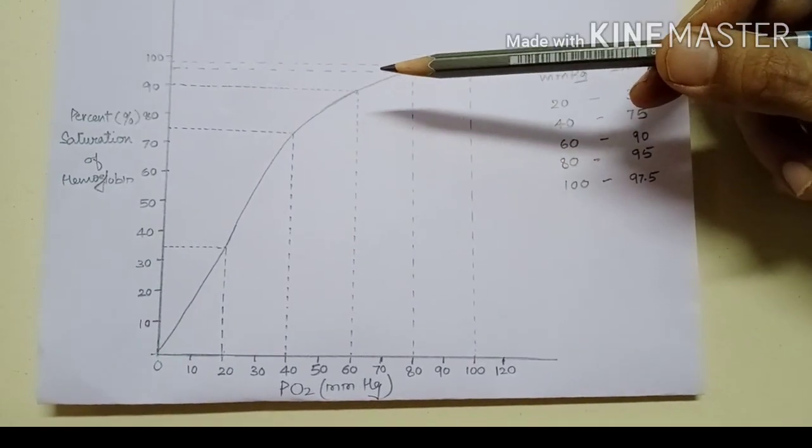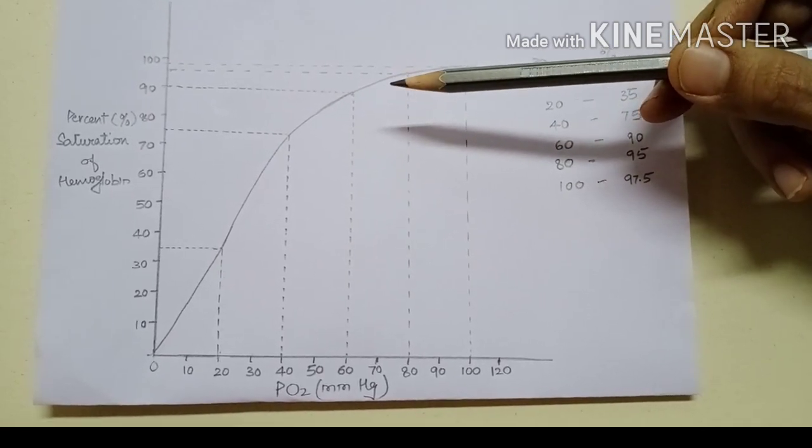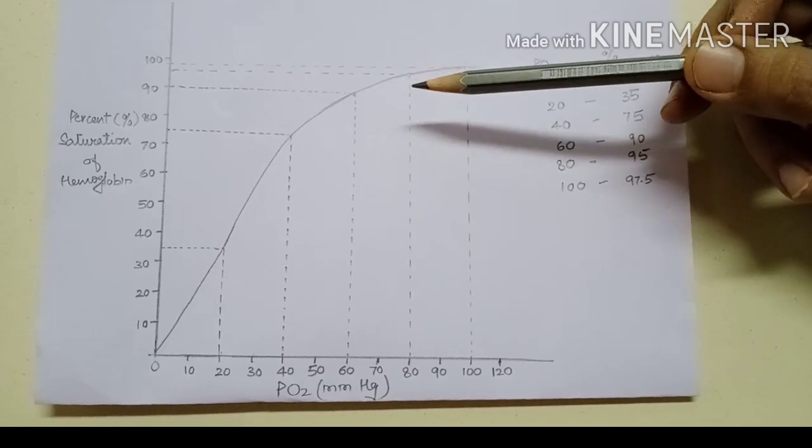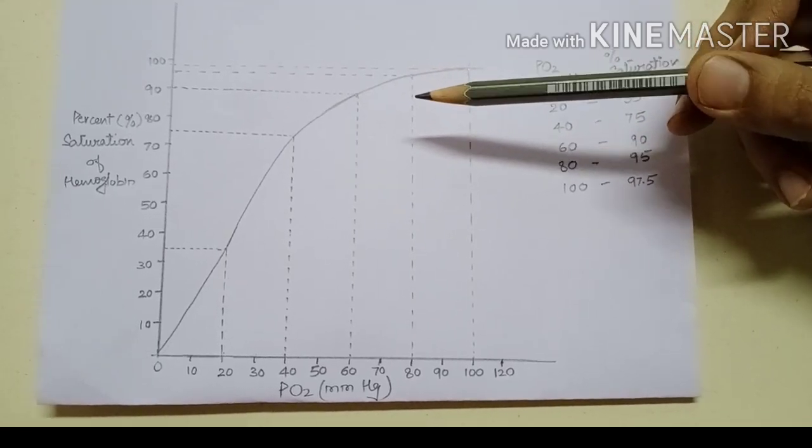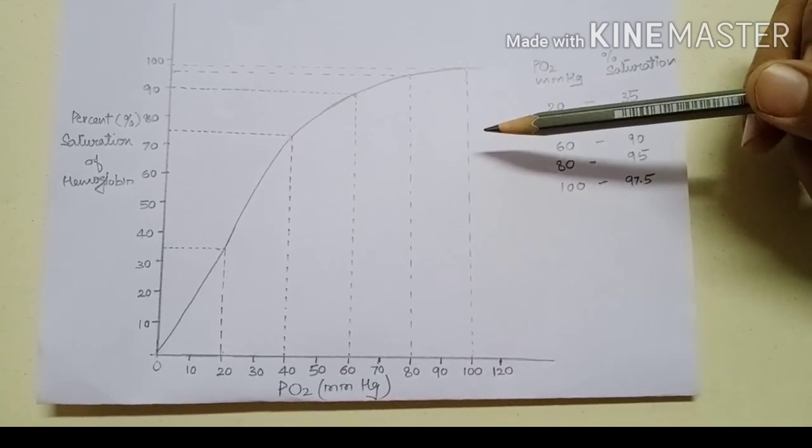The loading zone or plateau or association zone is related to oxygen uptake in the lungs. When partial pressure of oxygen is 100 mmHg or above, hemoglobin is about 100% saturated.